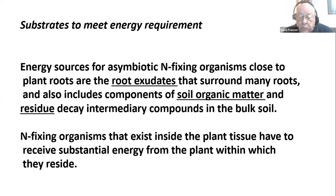A 200-bushel corn crop might leak maybe 1,000 pounds of carbohydrates out of the root. We don't think of roots being that leaky, but they really, really are. This is a major food source for asymbiotic nitrogen fixers.